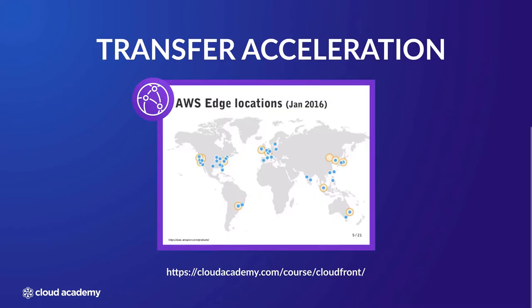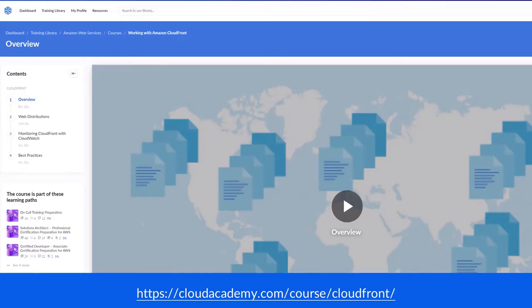Amazon CloudFront is a content delivery network service, a CDN, which essentially provides a means of distributing traffic worldwide via edge locations. The AWS edge locations are sites deployed in major cities and highly populated areas across the globe. More information on Amazon CloudFront can be found in our existing course.